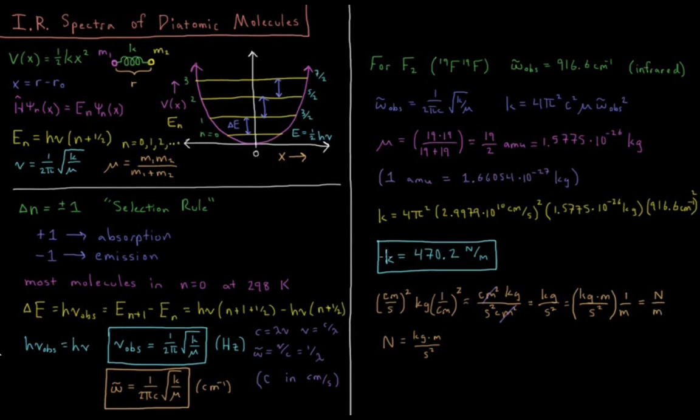So a kilogram per second squared equals kilogram meter per second squared times one over meter. And that indeed gives us one newton per meter, just as we expect for the unit of this force constant. How much force do we get per given unit of displacement?